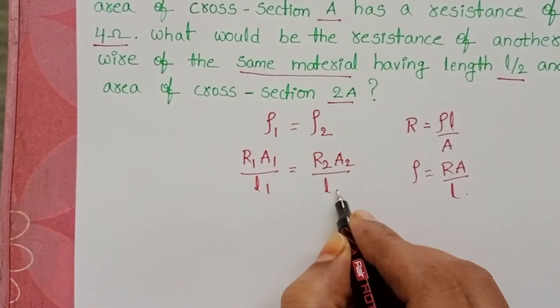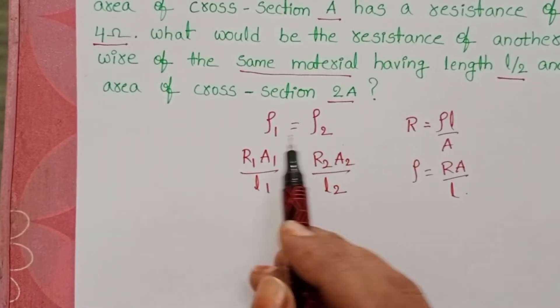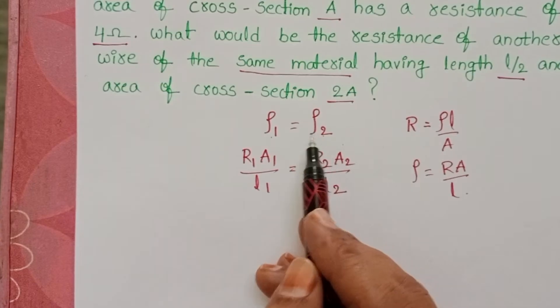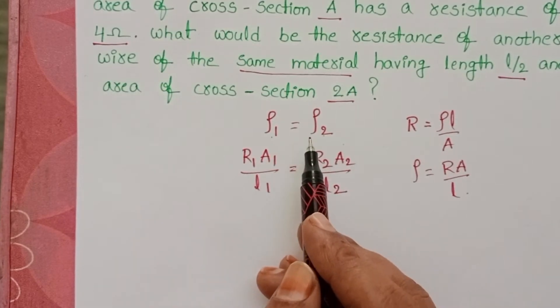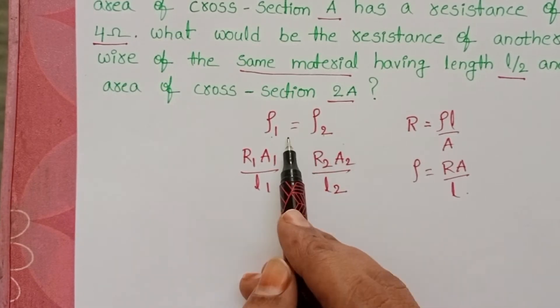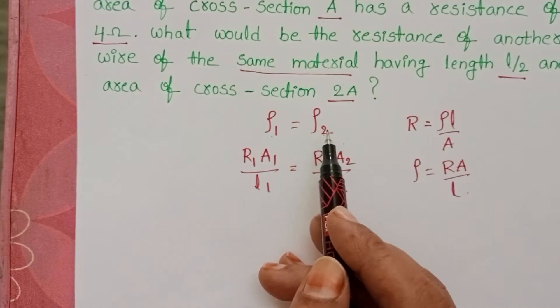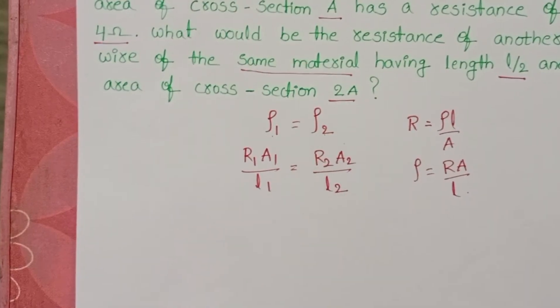To understand why we take ρ₁ equals ρ₂: these two wires are made with the same material, and resistivity depends upon the nature of the material.